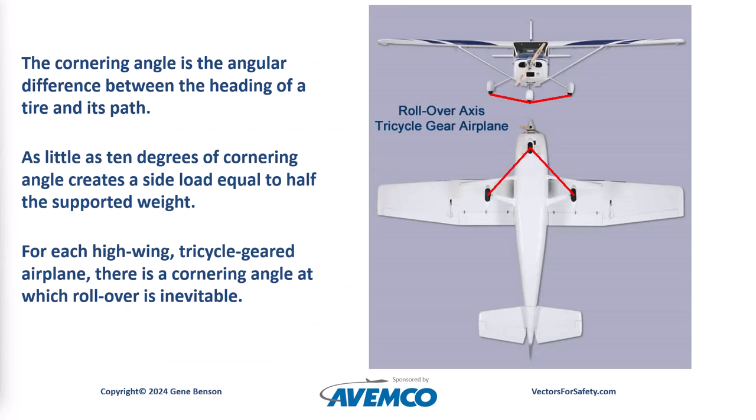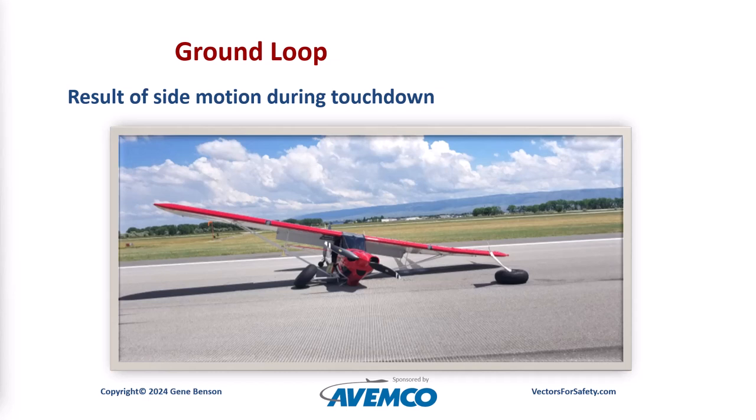So now we're on the ground, but it's not over yet. Once on the ground, we must maintain airplane control. We want to avoid the rollover in tricycle gear airplanes or the ground loop in any airplane, but more commonly in tail draggers. The cornering angle has much to do with this — it is the angular difference between the heading of the tire and its path. Whenever a load-bearing tire's path and heading diverge, a side load is created, accompanied by tire distortion. As little as 10 degrees of cornering angle creates a side load equal to half the supported weight. For each high-wing tricycle-geared airplane, there is a cornering angle at which rollover is inevitable. The example shown here is not a runway excursion because the airplane did not leave the runway, but ground loops often end up beside the runway. In any case, we want to avoid landing with a side load on the landing gear.